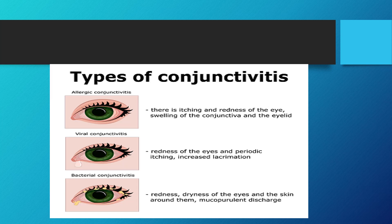Here the types of conjunctivitis are again visible in a table. Allergic conjunctivitis shows itching, redness, and mild swelling of the conjunctiva. In viral conjunctivitis, watering — also called lacrimation — and redness are more marked. Then comes bacterial conjunctivitis where yellowish or mucopurulent discharge is very obvious.